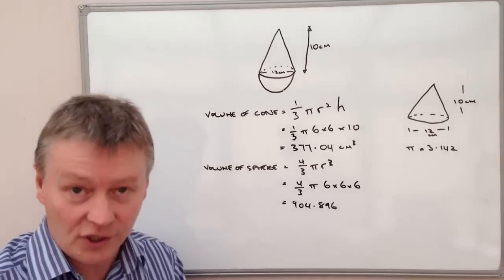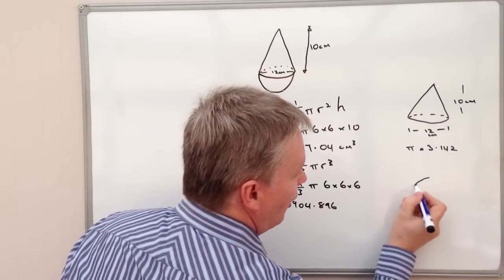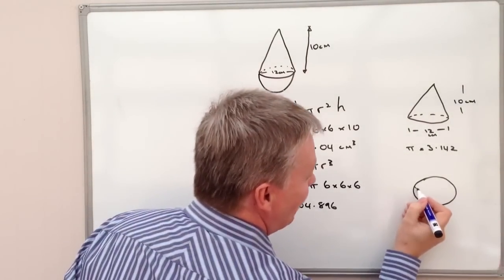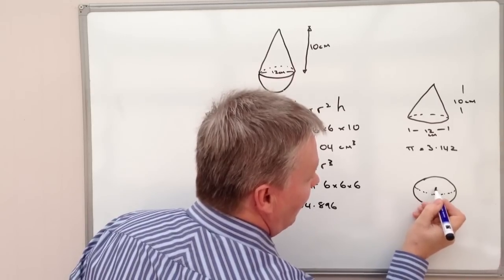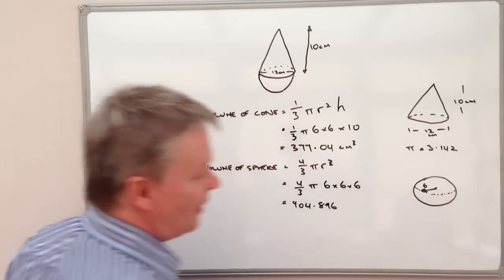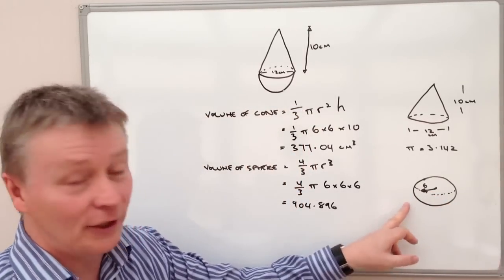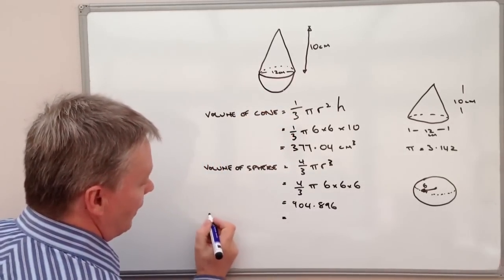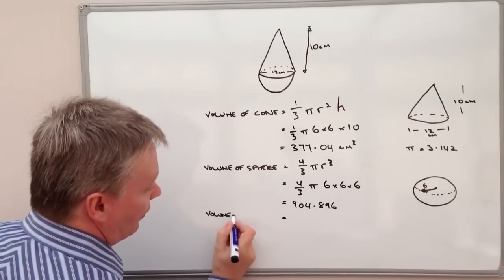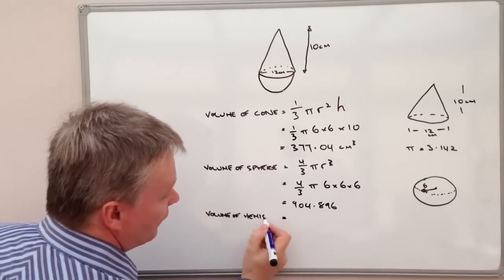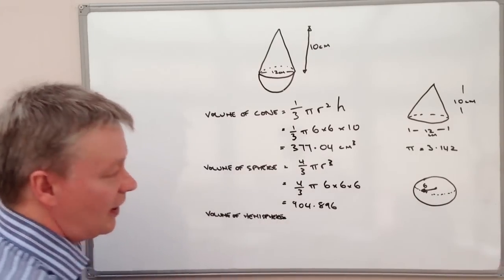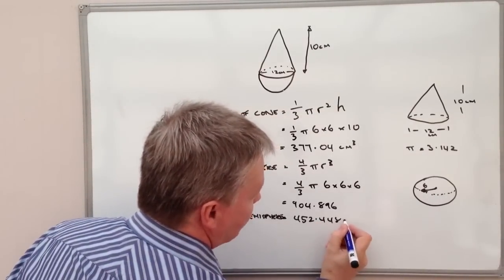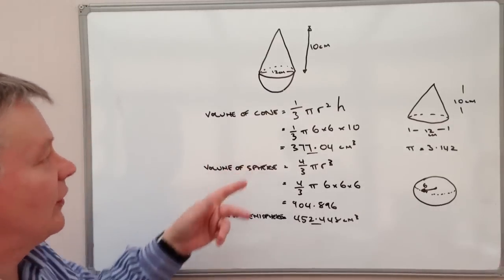That value of 904.896 is for the whole sphere — like a golf ball with a radius of 6 centimeters. However, we only have half a ball, so we need the volume of the hemisphere, which is half of that value. The volume of the hemisphere is therefore 452.448 centimeters cubed.